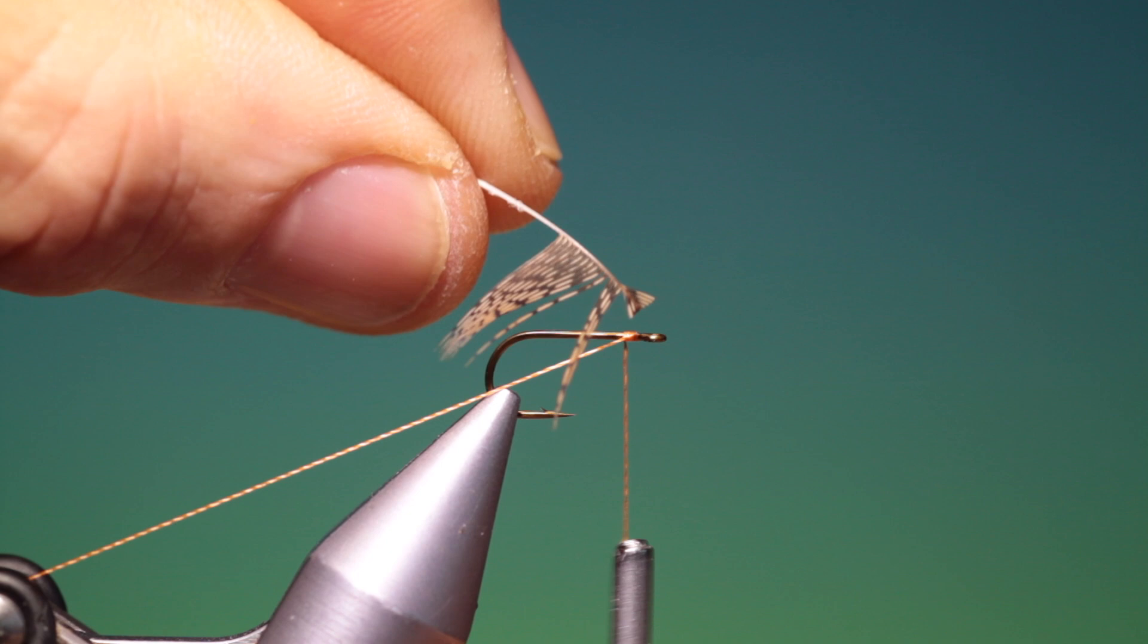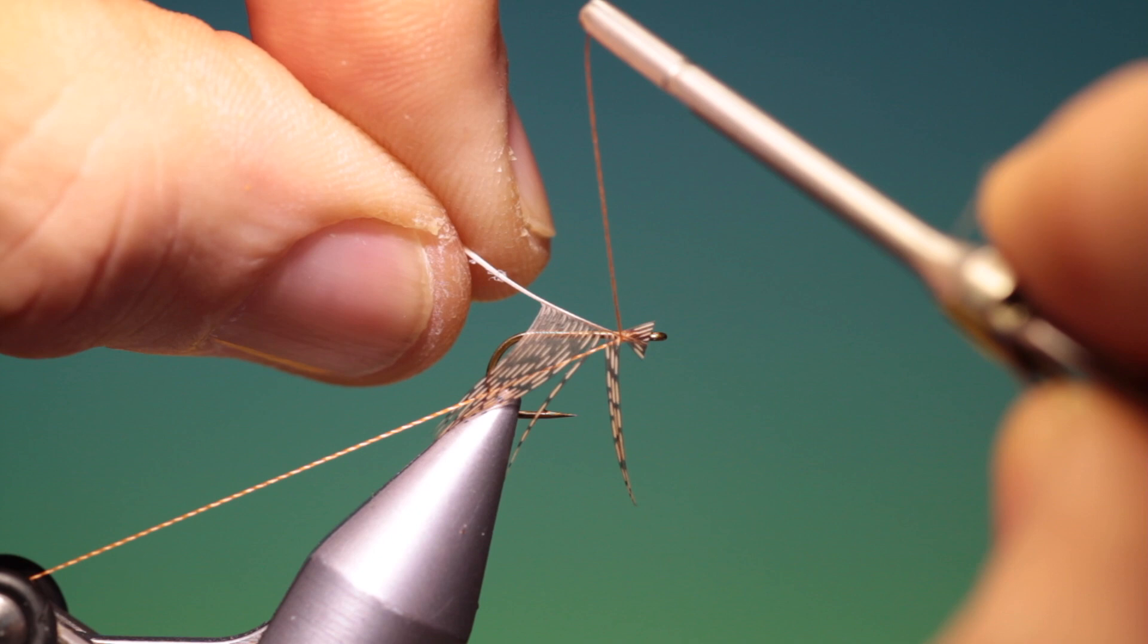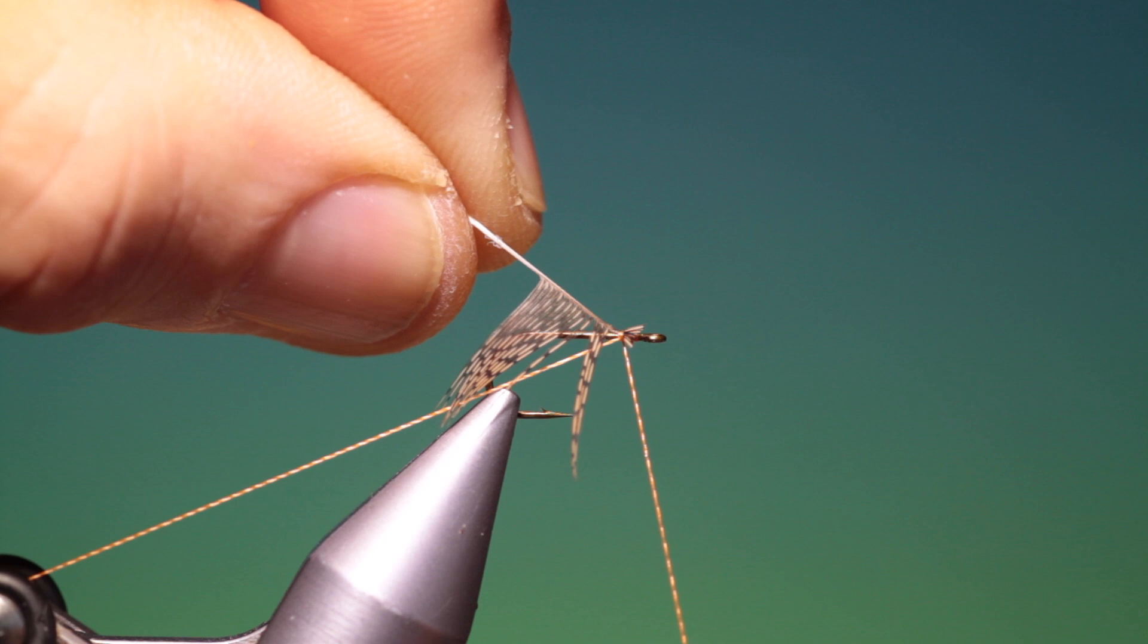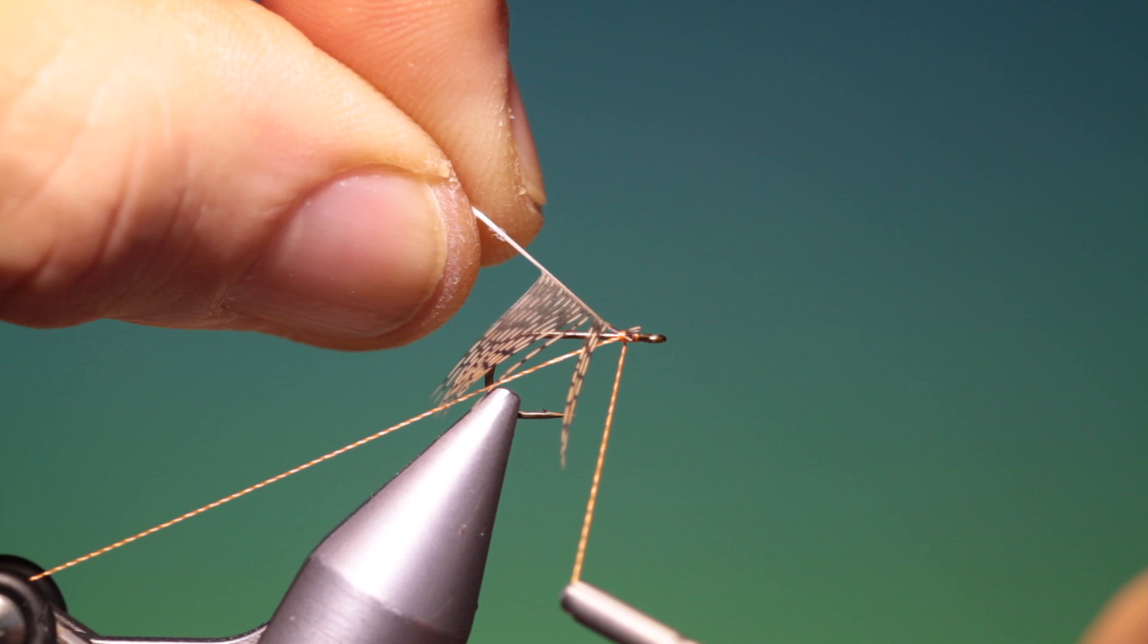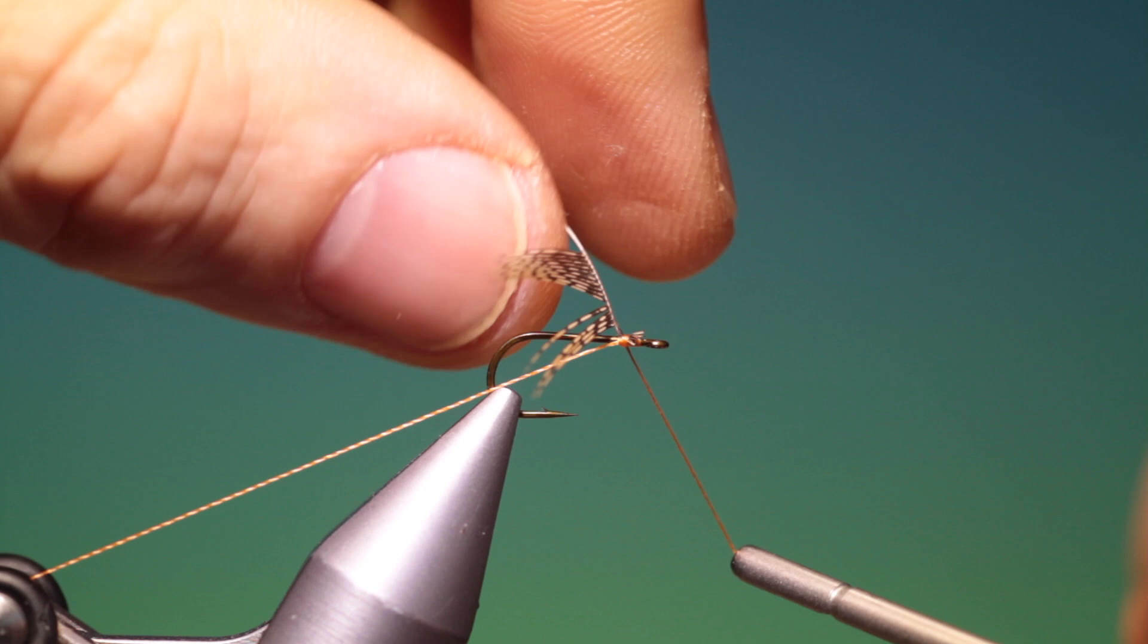Then what we do is we make one turn, keeping pressure on your tying thread just pull the hackle through, another turn to secure it and then we can go back here and we fold the hackle over.